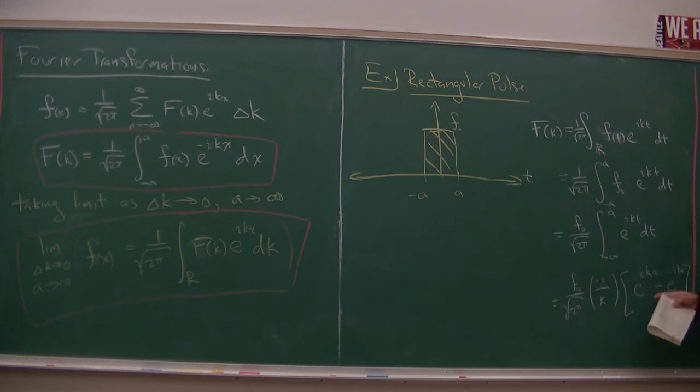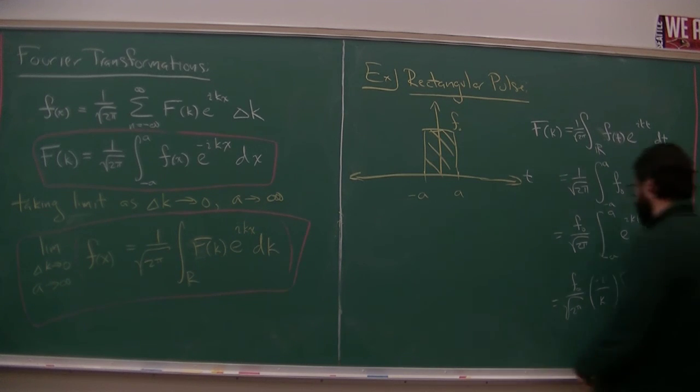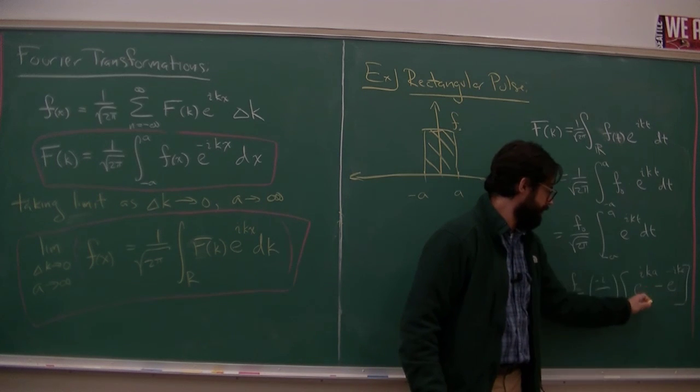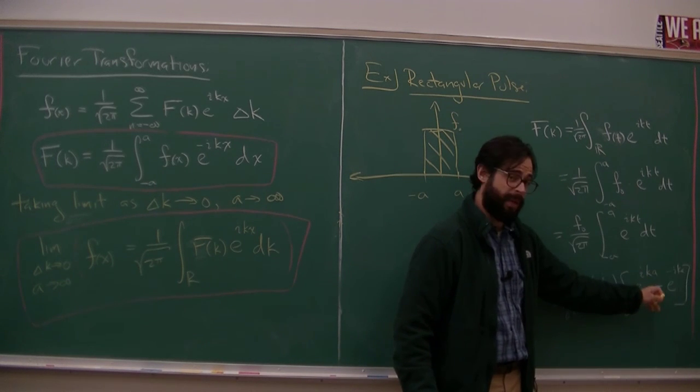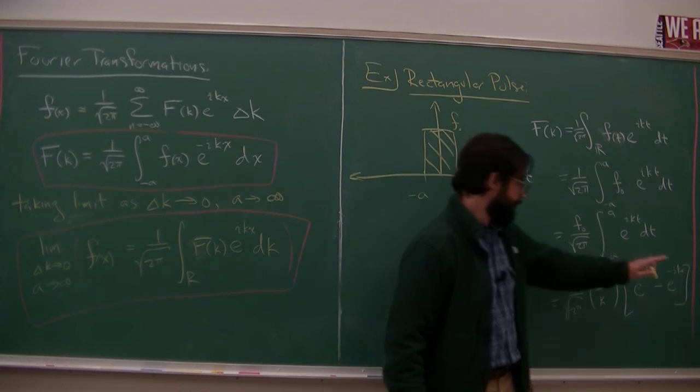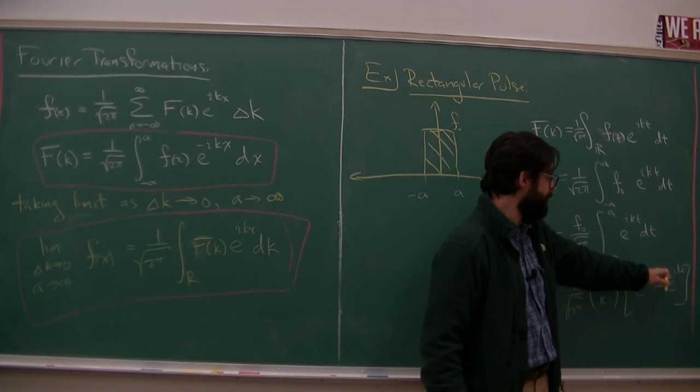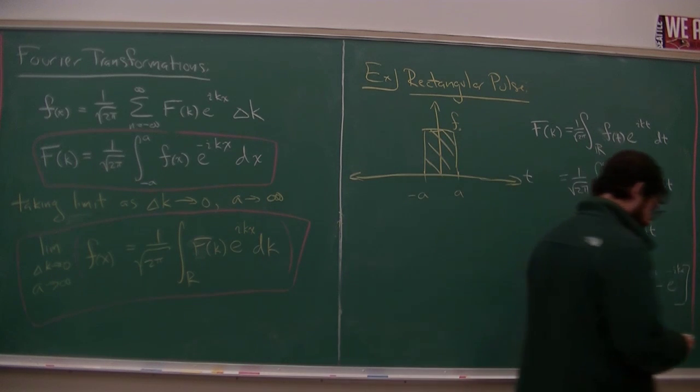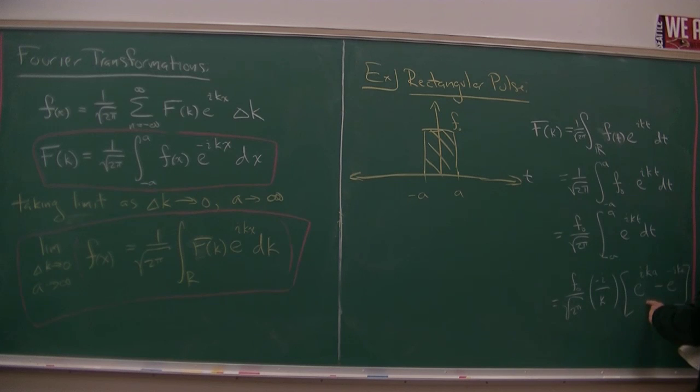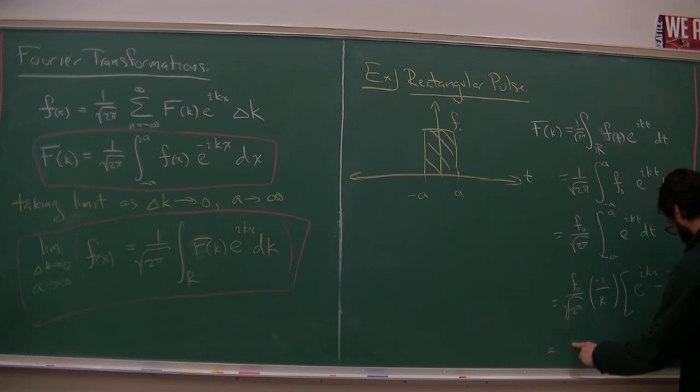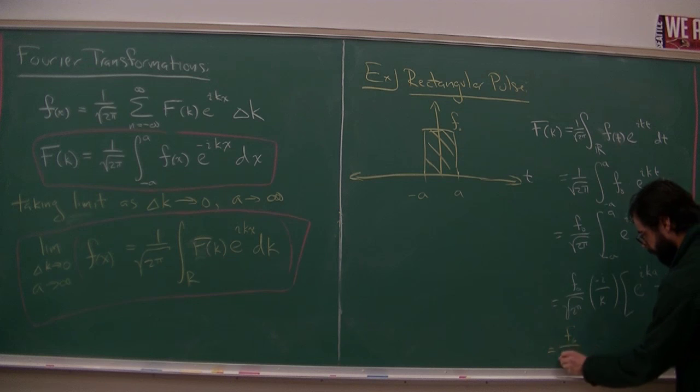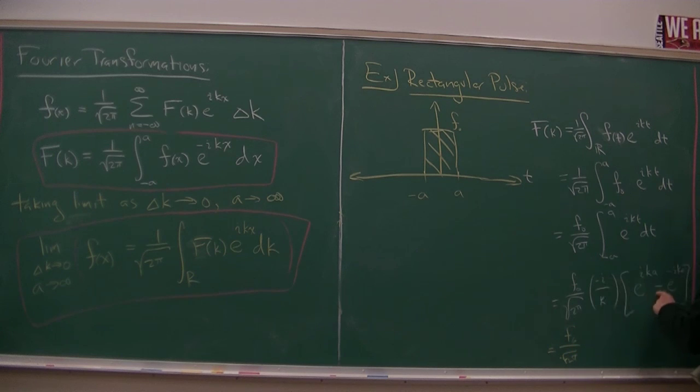And then there's a little bit of shuffling that goes on. At this point, you should start being a little bit more trained to see e to the i k plus or minus. These are complex valued arguments. These are sines and cosines. Real valued arguments, these are hyperbolic sines and hyperbolic cosines. But anyway, I go fishing for a little bit. I recognize this is two sine. And what I get at the end of the day is f0 over root two pi. The i goes away. We have a two. And we're left with the k. This is what's called a sinc.